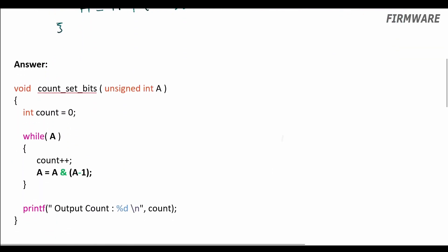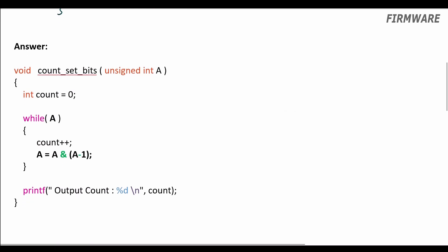For your knowledge, counting the number of 1s is usually provided as an intrinsic function to the developer for the specific processor. So we usually don't have to implement it ourselves and we directly use the intrinsic, which does this task much much faster. In simulation cases though, we sometimes need to implement this.